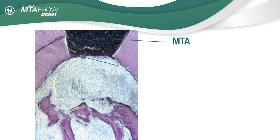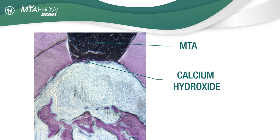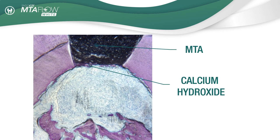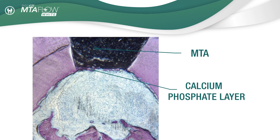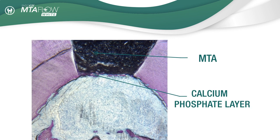MTA releases calcium hydroxide when it sets. In synthetic body fluids or in the body, the calcium hydroxide induces the formation of a calcium phosphate layer on its surface. This layer is recognized by the body as hydroxyapatite, which induces a healing reaction.